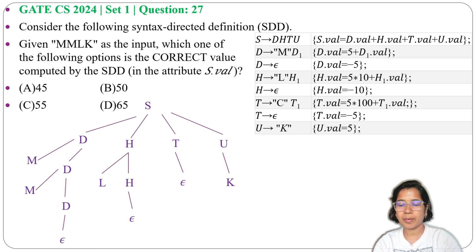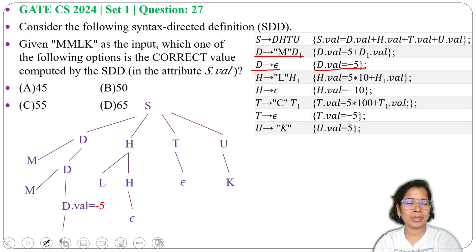Next we need to evaluate by bottom-up order. So D derives epsilon here. Definition is D.val = -5, so here we will write D.val = -5. Next, D derives M, D. Here D.val = 5 + D1.val, so this D.val will be 5 + (-5) = 0. Next, again for this D, D.val will be 5 + D1.val, so 5 + 0 = 5.